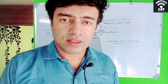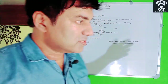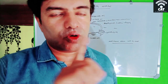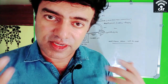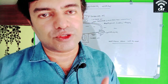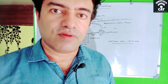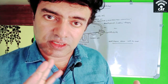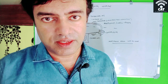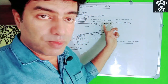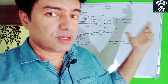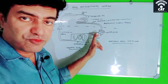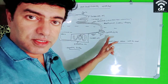The refrigerant passes through all the coils and components, and the key thing is that it changes its phase from liquid state to vapor state and from vapor state back to liquid state. During one cycle, the temperature remains constant — only the state changes. The temperature stays the same but the refrigerant changes between vapor and liquid across the different phases.